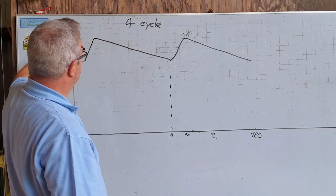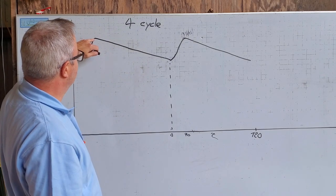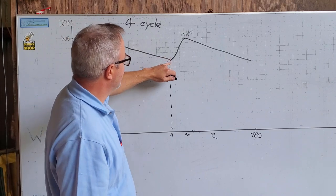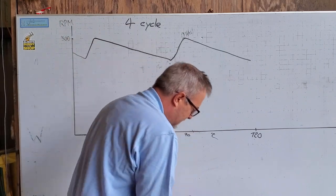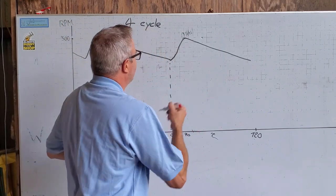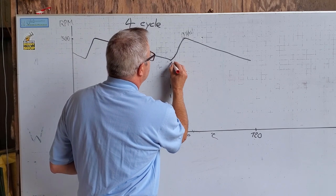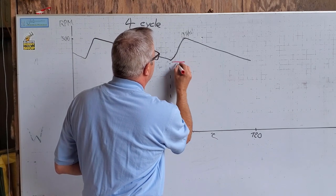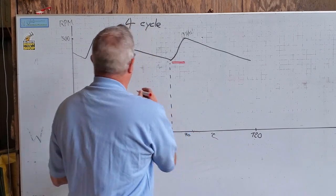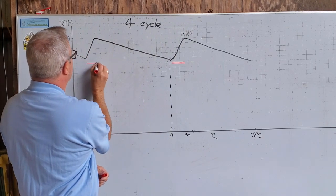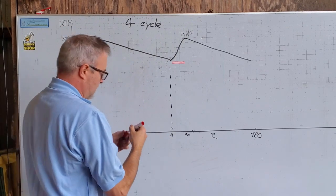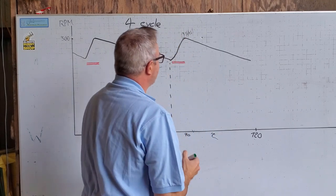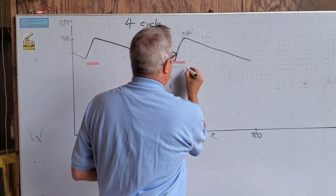It has some amplitude from maximum flywheel speed to minimum flywheel speed. Adding energy, let's put this in red, adding energy over this period and also here, and taking energy out over this period.